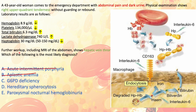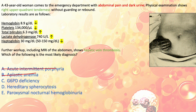Further workup including MRI of the abdomen shows hepatic vein thrombosis. This is almost a giveaway to the diagnosis — hemolytic anemia combined with hepatic vein thrombosis is very characteristic of paroxysmal nocturnal hemoglobinuria (PNH), because this type of hemolytic anemia causes thrombosis.